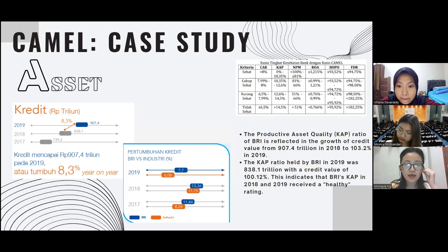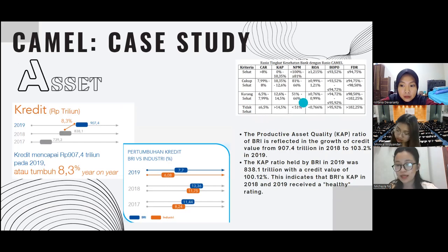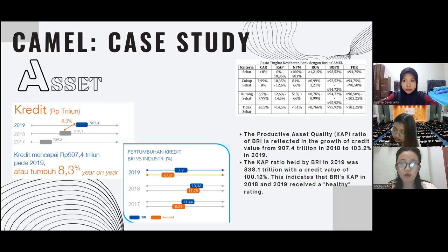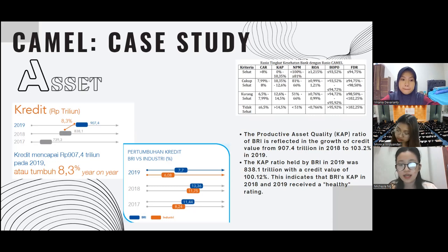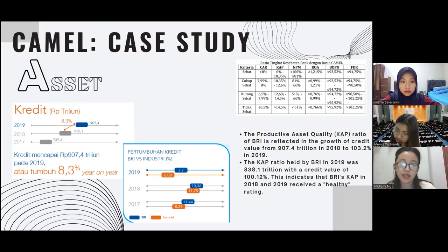For the Asset component, since the full KAP data is not available, we can assess it from the credit growth. The productive asset quality (KAP) ratio of BRI is reflected in the growth of credit value — from around 900 trillion in 2018 to 838 trillion in 2019. So this is a decrease, but BRI's asset quality is still categorized as the highest healthy rating.